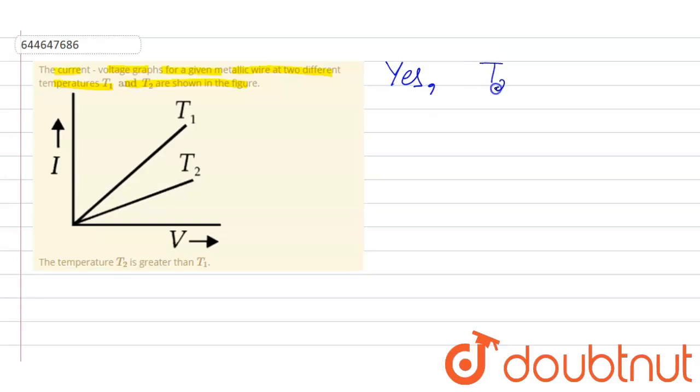Now, how? Let's find out. We know the slope of I-V graph gives one upon resistance. So that means if we see in the graph, the slope of T1 is greater than the slope of T2.